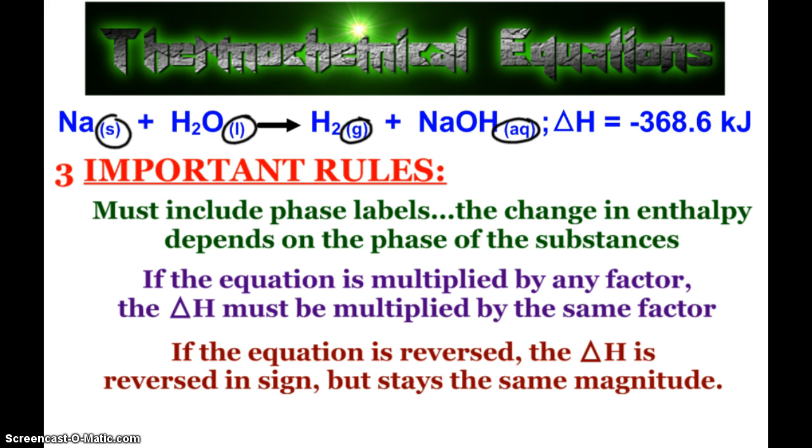If you multiply this equation by any factor, then the delta H must be multiplied by the same factor. That's because we're talking about a state function here. It depends on how much.